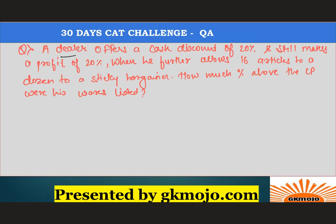So there is this dealer who is offering a cash discount of 20 percent. Let's suppose the listed price of the article was rupees 100. A 20 percent discount means rupees 20 is given as discount, so you get rupees 80. Now he is also offering 16 articles to a dozen.